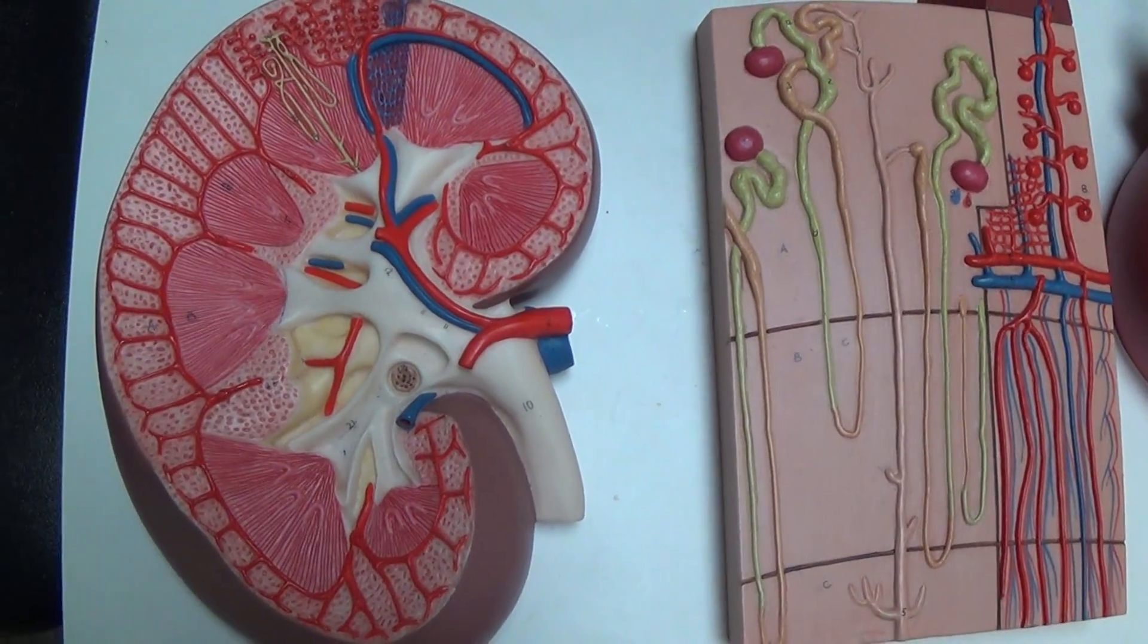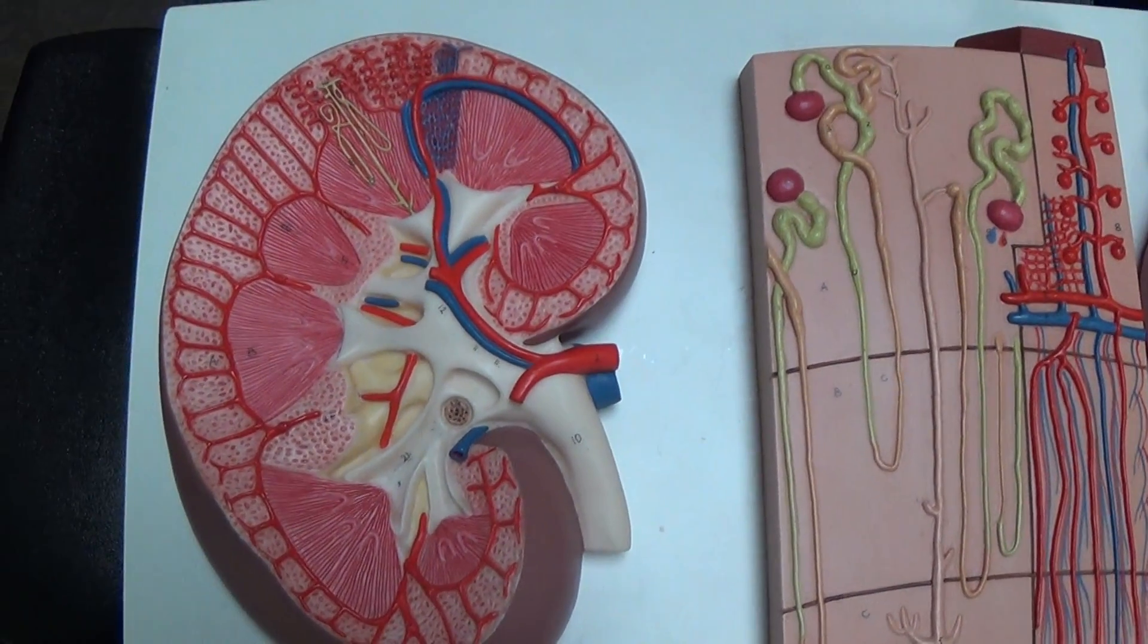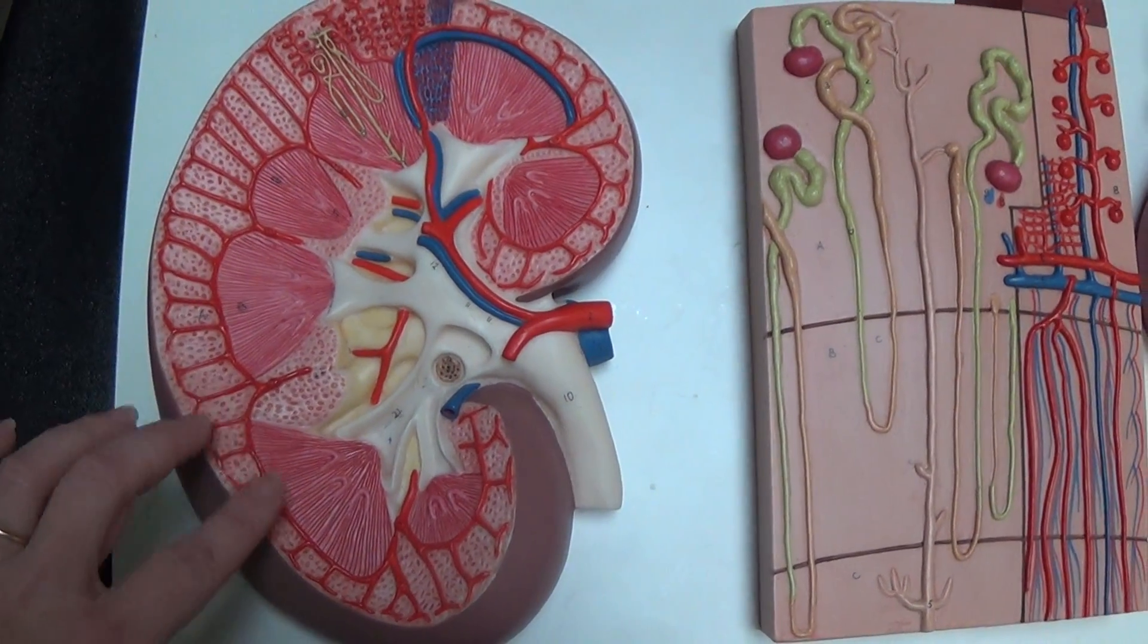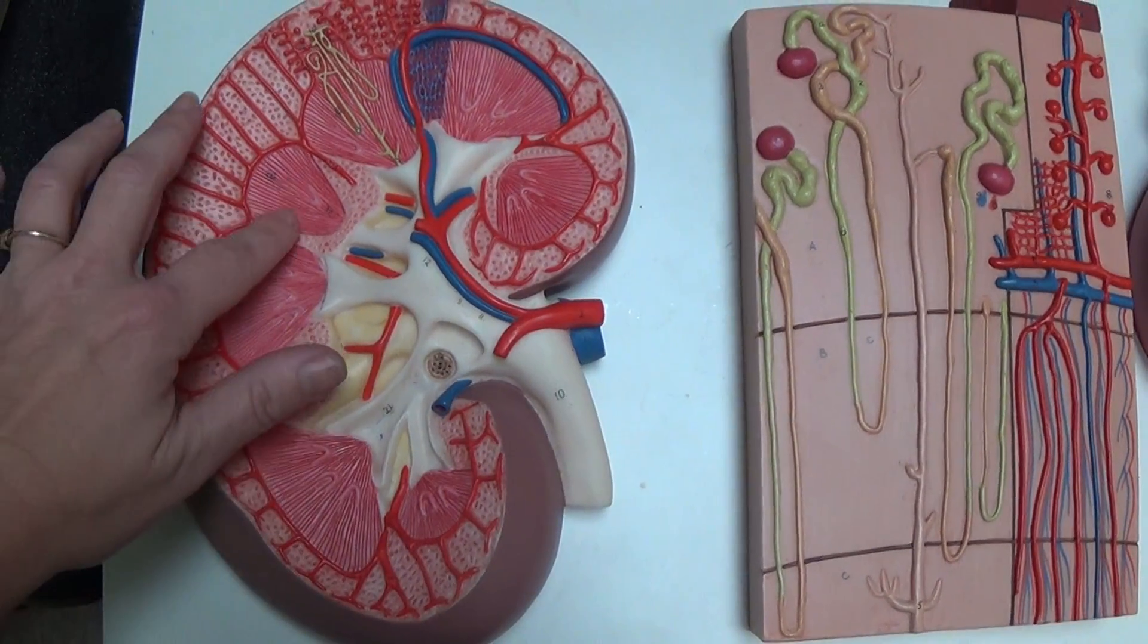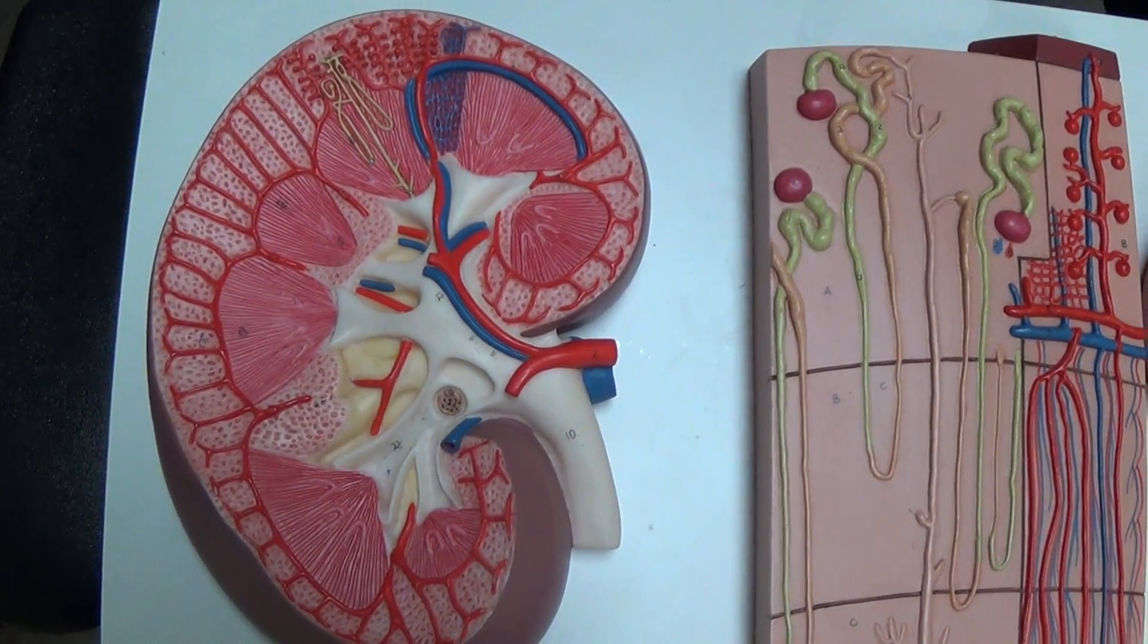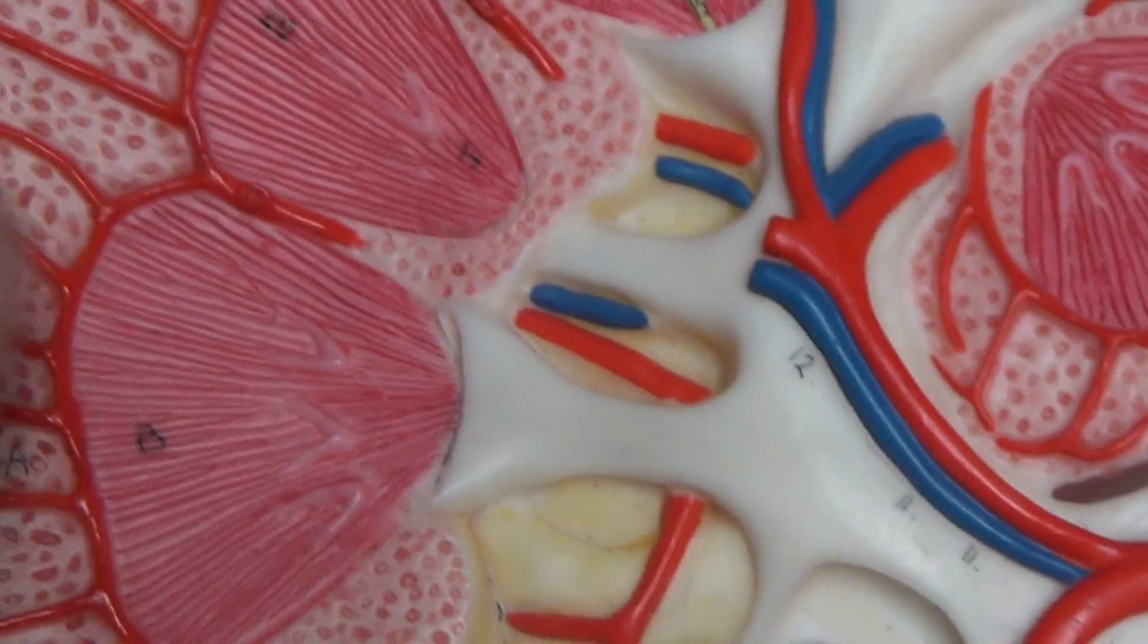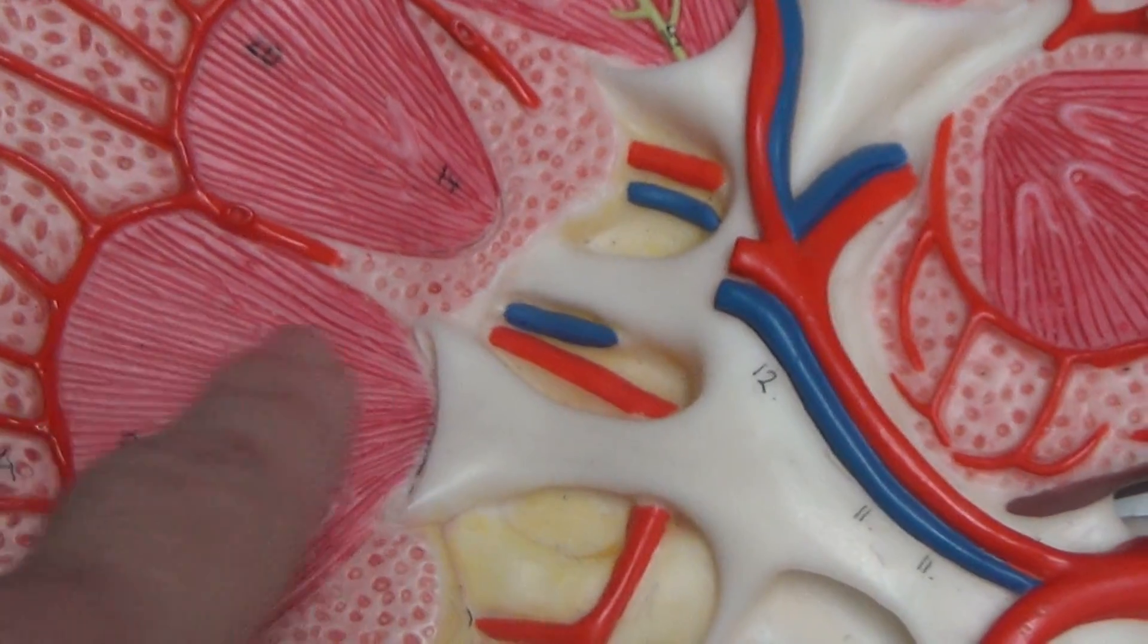Going back to the kidney itself, we divide the outside of the kidney and the inside of the kidney. The inside is called the medulla and the medulla is made up of pyramids which are these striped appearances here.